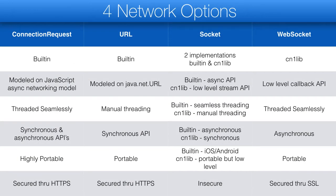The most common networking API in Codename One is ConnectionRequest, which is paired with the Network Manager. It's inspired by JavaScript's asynchronous networking but tries to provide more low-level control. The ConnectionRequest API was developed with a goal of extreme portability and best practices built in. It's seamlessly threaded and can automatically work with the EDT as a synchronous or asynchronous API.